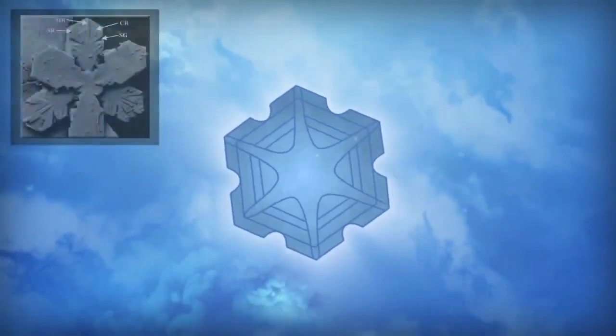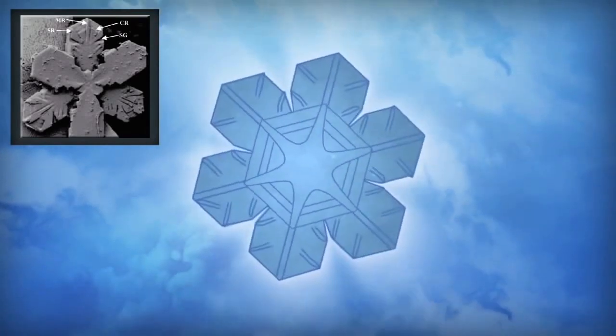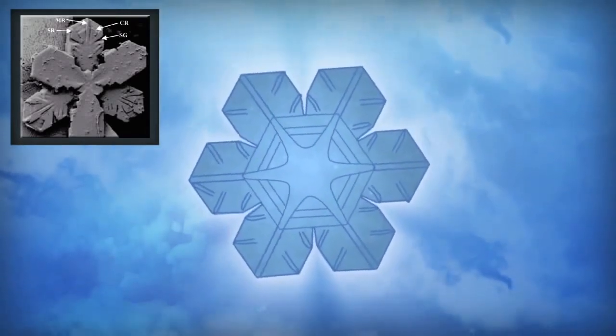These six branches form the corners of a hexagon which forms into this shape because the water molecules chemically bond into a hexagonal network.